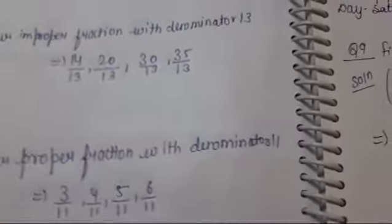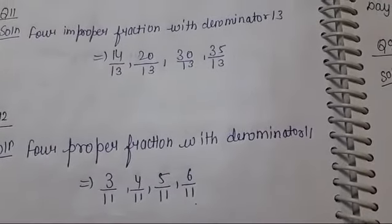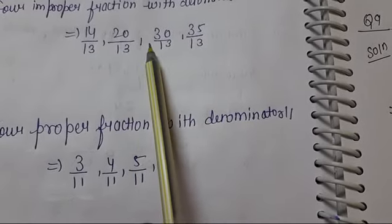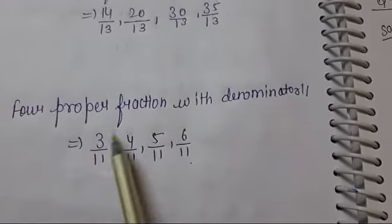Next question number 11: 4 improper fractions with denominator 30. Numerators are 14, 20, 30, and 35. Proper fractions are 3 upon 5.